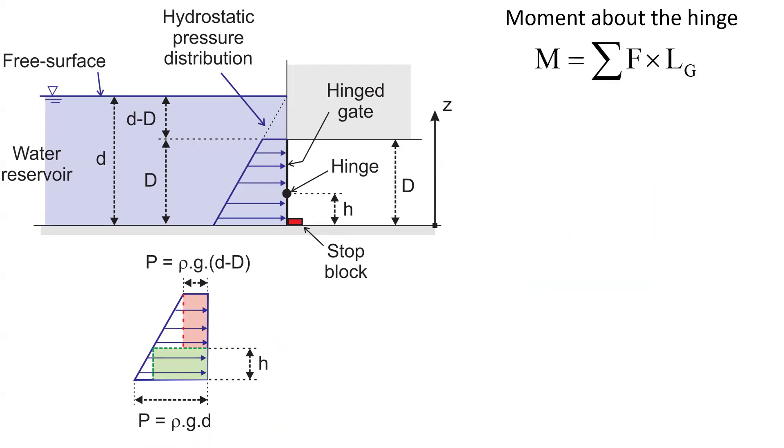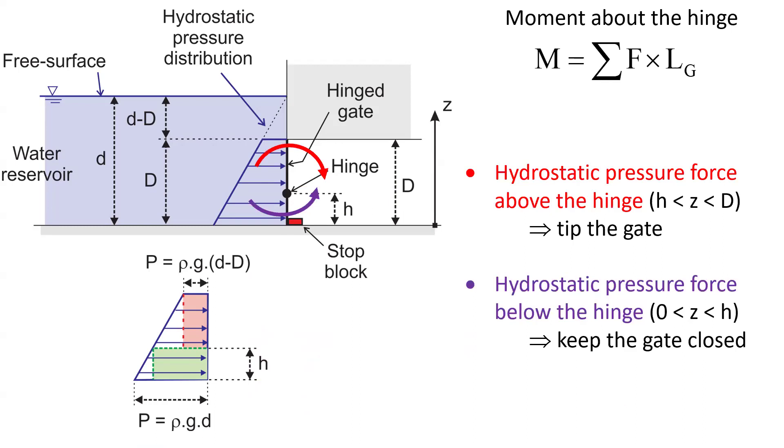Then, let us apply the angular momentum equation about the hinge. That is, let us look at the force acting on the gate that could lead to tipping. There is a hydrostatic pressure force above the hinge that induces the tipping of the gate, while the hydrostatic pressure force below the hinge will keep the gate closed.